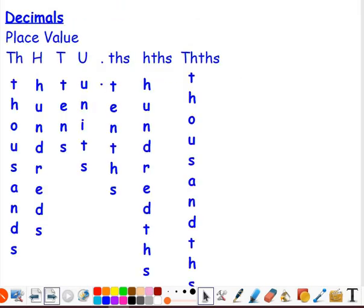So decimal place value. We looked at place value when we did the topic of whole numbers. Place value tells us the value of a specific digit within a number. So with our decimals, the first number after the decimal point, this digit here, is always our tenths digit. So this column, the first number after the decimal point, is always our tenths.